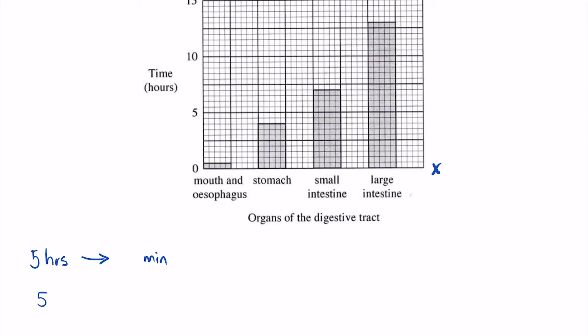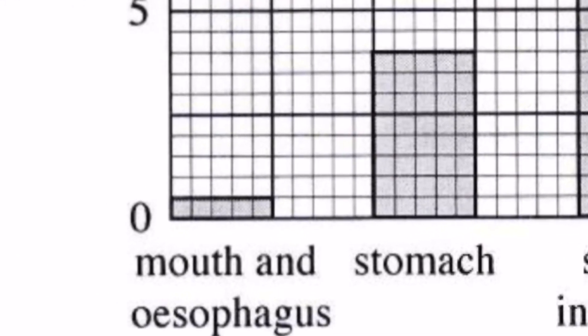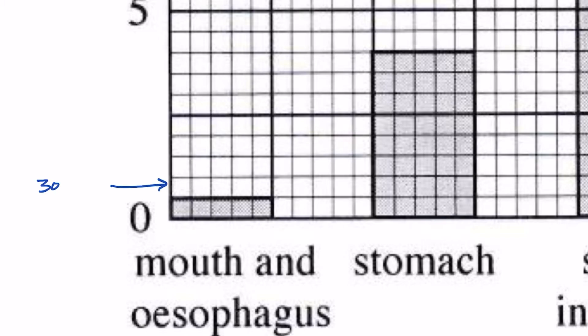In order to figure out the minutes, 5 times 60 minutes equals 300. So 5 hours is the same as 300 minutes. Now let's divide the 300 minutes by the 10 units or the 10 spaces. 300 divided by 10 is 30. So each of these units here represent 30 minutes. Now that we know that, we can determine the time spent in the small intestine, the time spent in the stomach, and then calculate the difference.